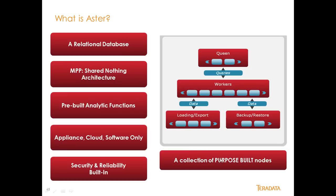Aster is a collection of purpose-built nodes. You have queens, you have workers, you have loader nodes and export nodes, and you have backup and restore nodes. The workers house the data, and the queens take the request — the query — and push it down to the workers, where they perform the query and fulfill it, then send the data back up to the queen, and the queen sends it back to the client.